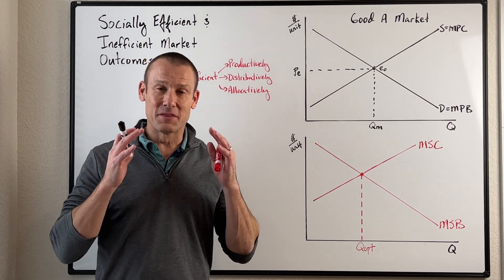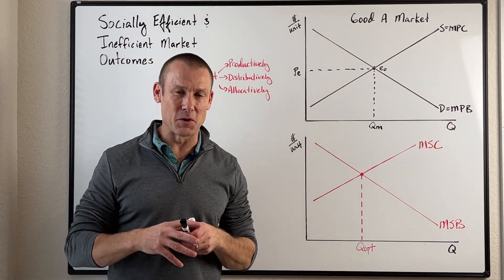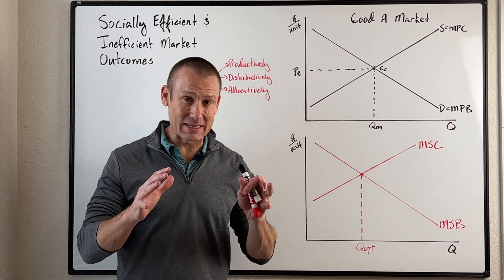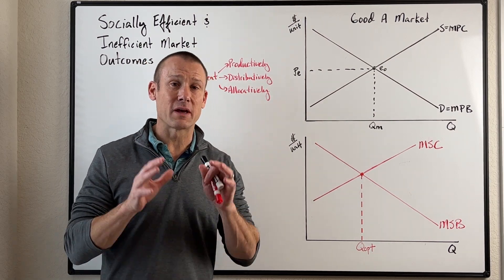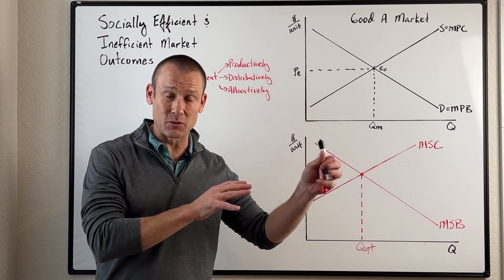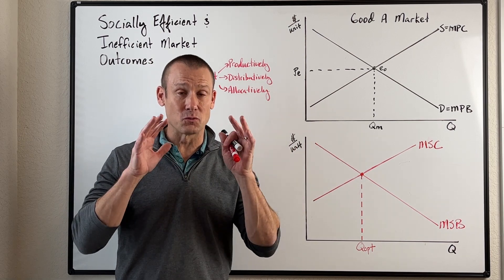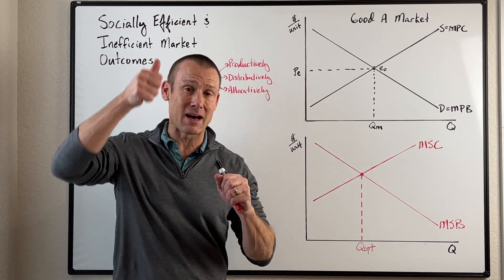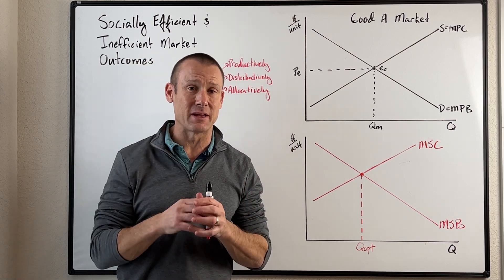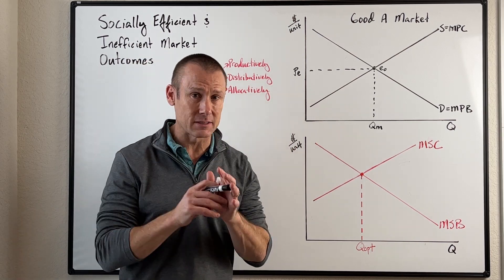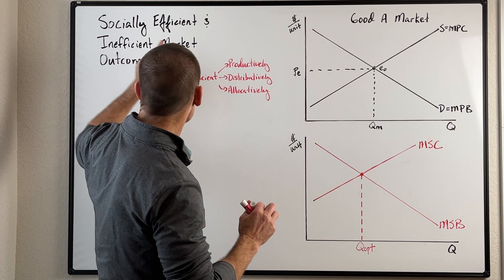Hey everybody. This is a big video. I'm going to try to stay high level. We're going to have a couple other videos after this to really get the topic. Here's the topic: socially efficient and inefficient market outcomes.